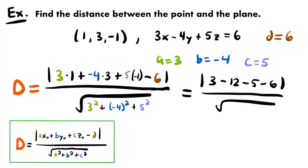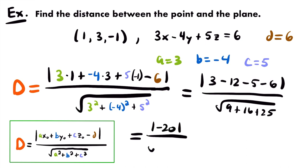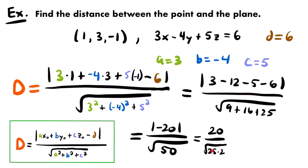Simplifying: we get the absolute value of 3 - 12 - 5 - 6, divided by √(9 + 16 + 25). Now 3 - 12 = -9, minus 5 is -14, minus 6 is -20. The denominator: 9 + 16 + 25 = 50. So we have |−20| / √50 = 20 / √50. Since 50 = 25 × 2 and √25 = 5, we get 20 / (5√2). Then 20/5 = 4, so this equals 4/√2.